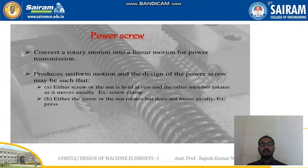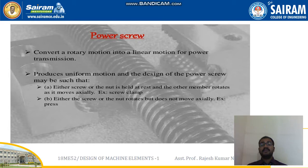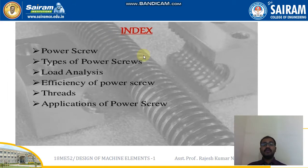Hello everyone. In this video we will be discussing about power screws. A power screw can be defined as a conversion of rotary motion into linear motion during power transmission. It produces uniform motion. The design of the power screw may be such that either the screw or the nut is held at rest and the other member rotates as it moves axially — for example, a screw clamp — or either the screw or the nut rotates but does not move axially — for example, a press.